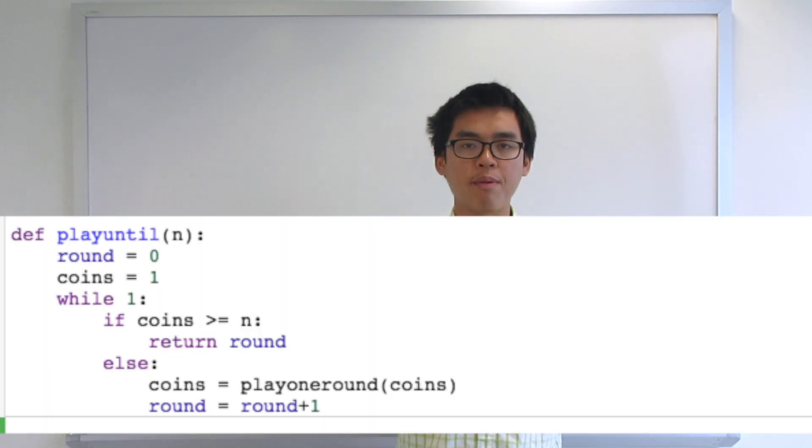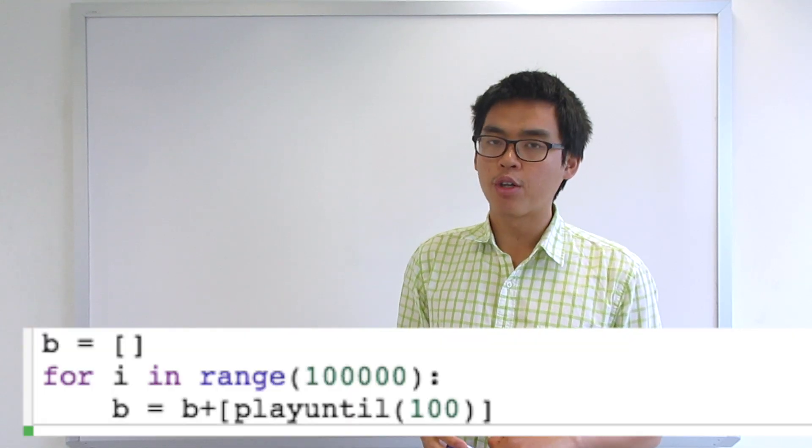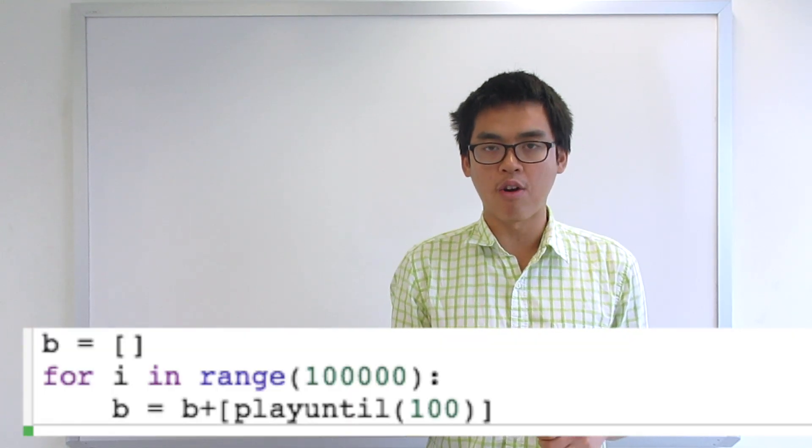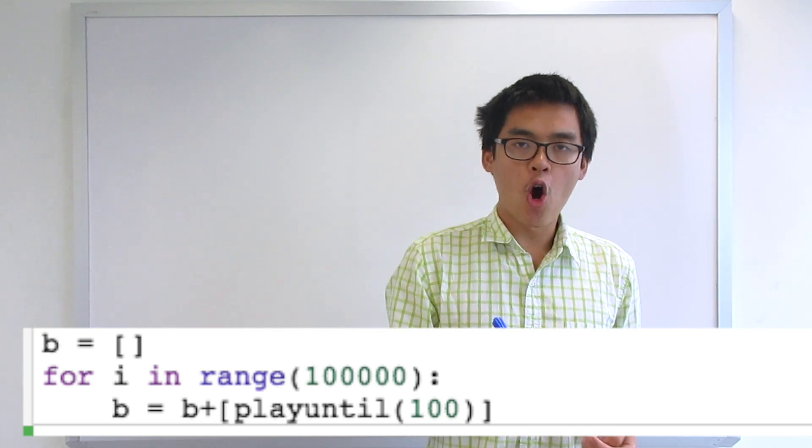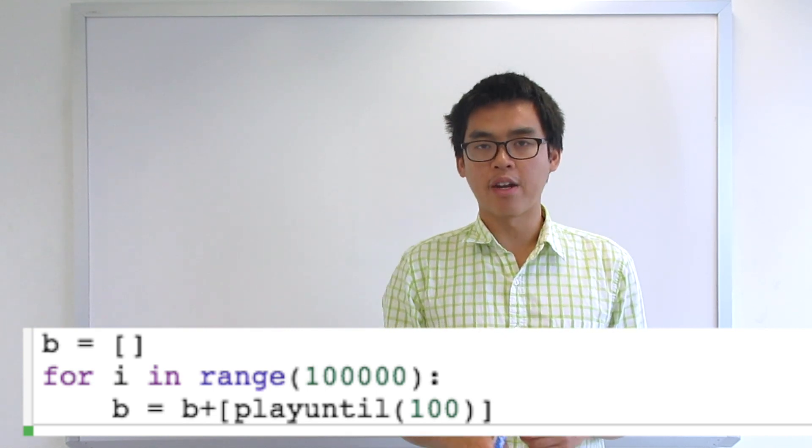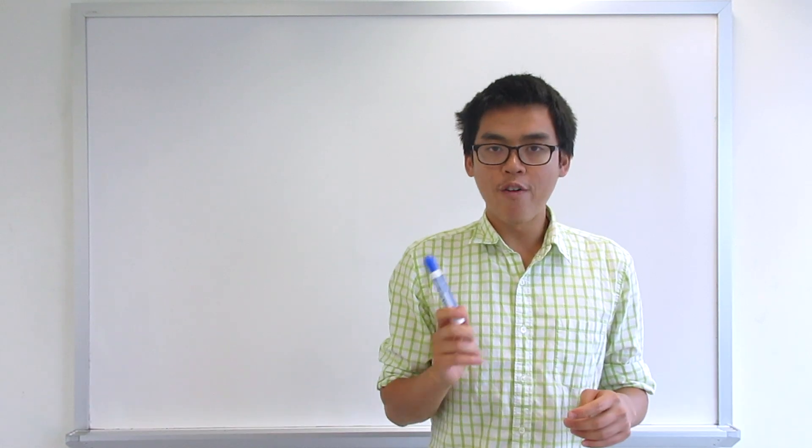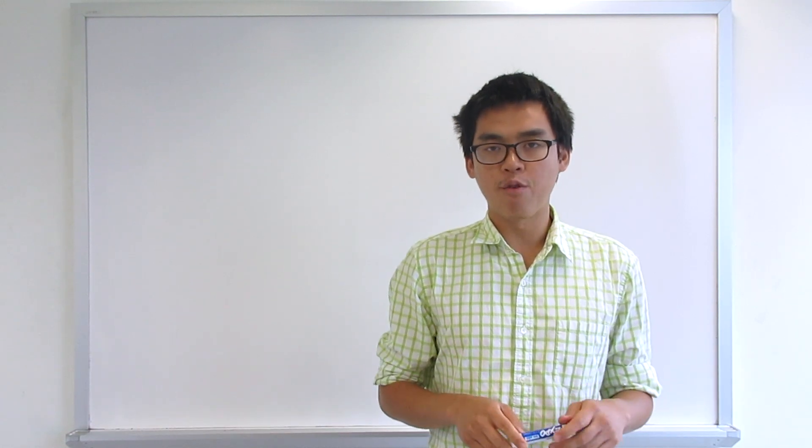Then I tell the computer what does it mean to play until we get a certain number of points. Lastly, I ask the computer to play the game until we get 100 coins. Write down the number of rounds, then start over with one coin and play again until we get 100 coins. We keep doing this over and over, so we see the number of rounds we get on average.